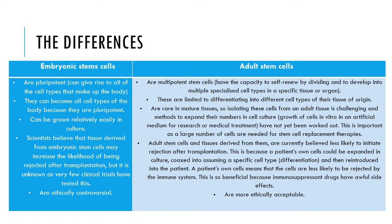Here is a table outlining the main differences between the two types of stem cells discussed. Embryonic stem cells are pluripotent and can become all cell types of the body. Because they are pluripotent, they can be grown relatively easily in culture.